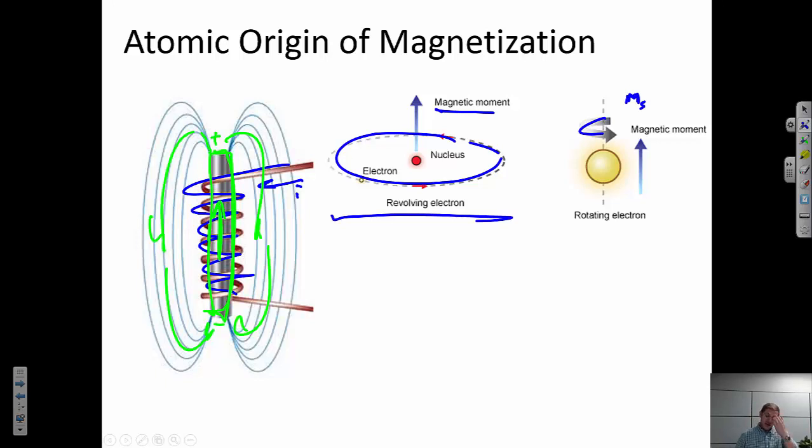The picture that some people like to draw is this electron spinning like a top. We're sort of imposing our classical picture of things spinning on it. That's not necessarily the best physical picture, but we don't really have a good physical picture. We just know that there's some inherent property of electrons themselves that leads to this magnetic moment from the electron contribution.